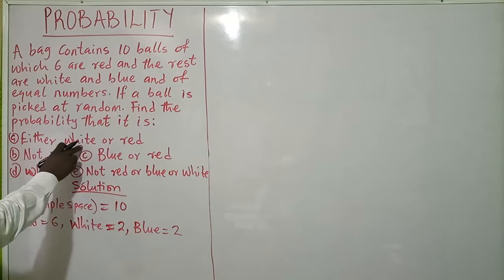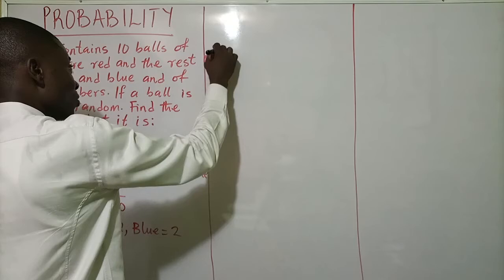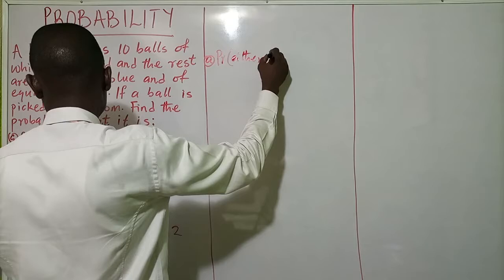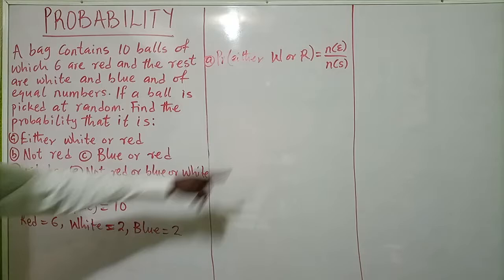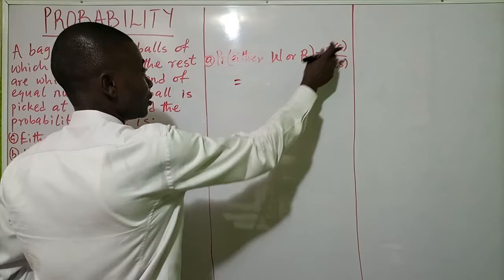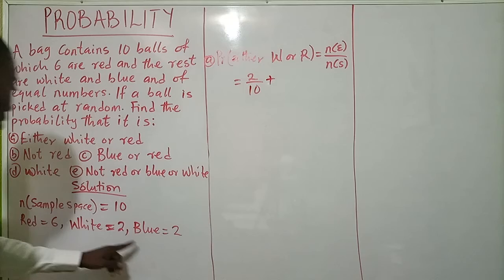Now we can answer the questions. Part A: find the probability that it is either white or red. Probability of white or red equals number of events over total outcomes. The number of white balls is two, and the number of red balls is six, over a sample space of ten. So that is two over ten plus six over ten.